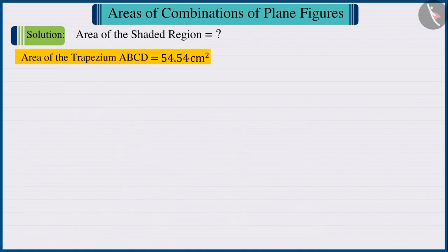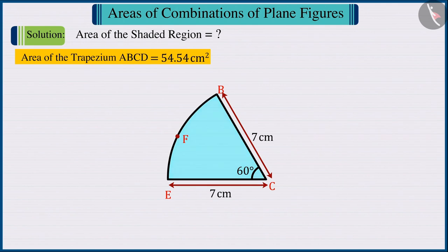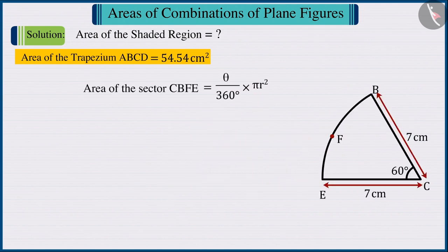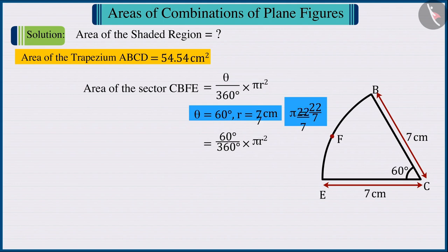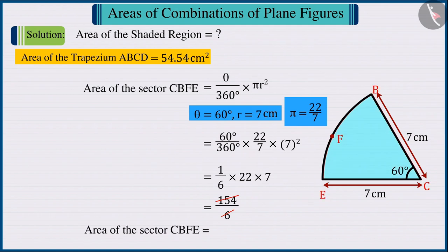Let's now focus on the sector CBFE. Substituting the value of theta as 60 degrees and the measure of radius as 7 cm in the formula for the area of a sector, we find the area of the sector CBFE as 25.67 cm².